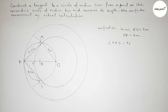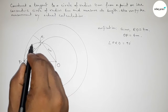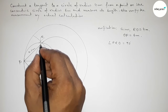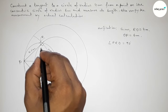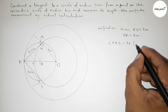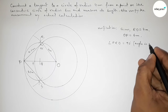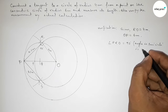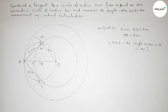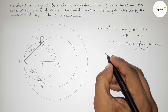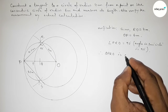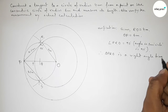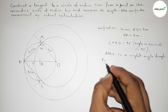The angle PRO equals 90 degrees because R lies on the circle with diameter OP (the circle with center Q). Since the angle in a semicircle is always a right angle, angle PRO is 90 degrees. Therefore, triangle PRO is a right-angled triangle.